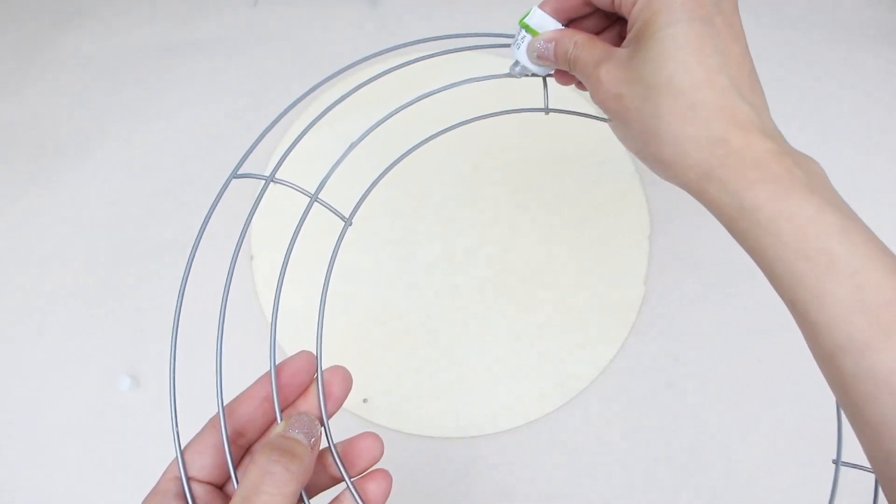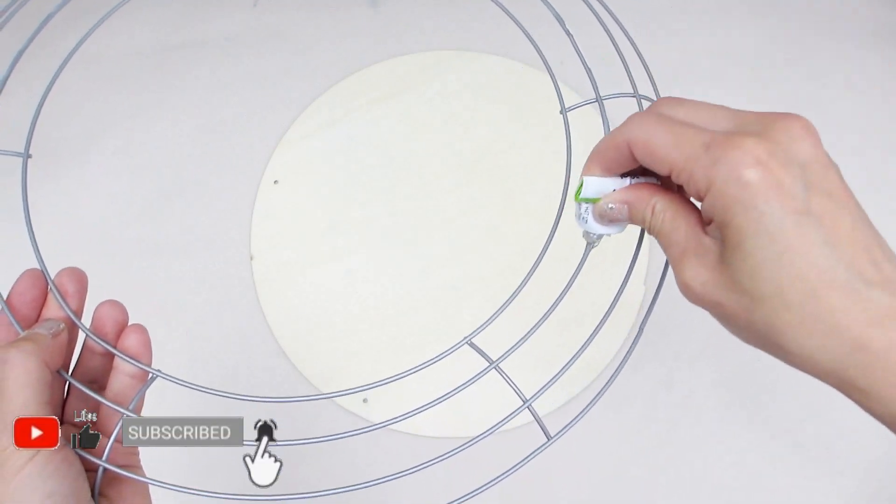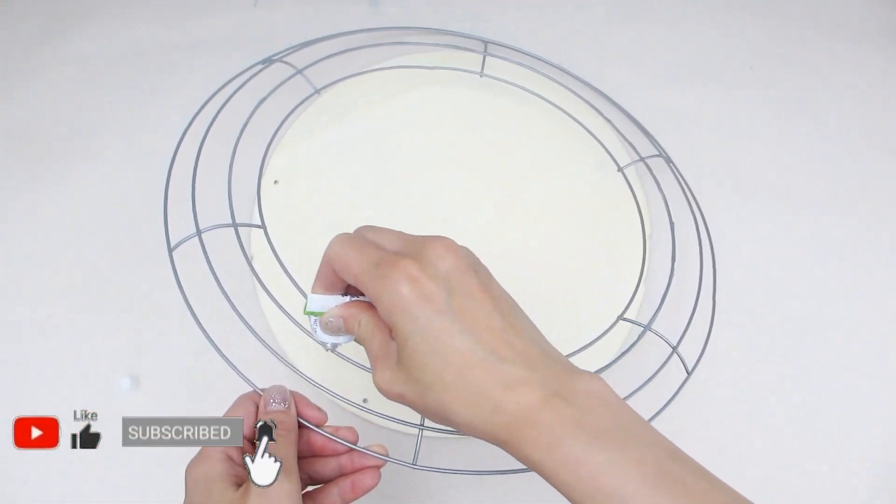Next I'm using Fix-All to adhere a metal wreath form to a wood panel to make another mirror that will be hung on the wall. Other surfaces and materials Fix-All can be applied to also include plastic, stone, fabric, and canvas.